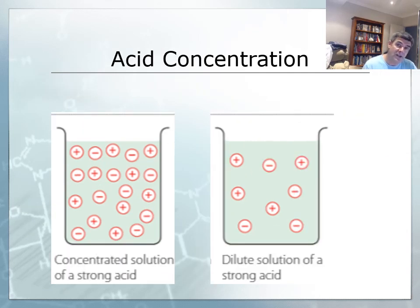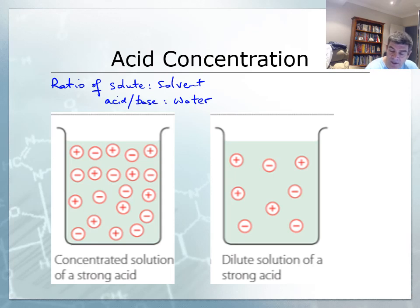On the other hand, acid concentration is the ratio of solute to solvent, which is usually going to be acid or base to water. When the ratio of solute to solvent is high, we have a concentrated solution. When the ratio is low, we have a dilute solution.